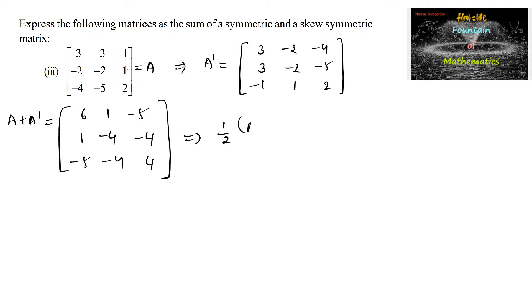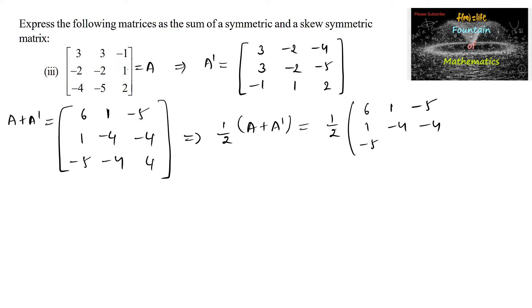We can write 1/2 times of A plus A transpose equal to 1/2 times of [6,1,-5; 1,-4,-4; -5,-4,4].